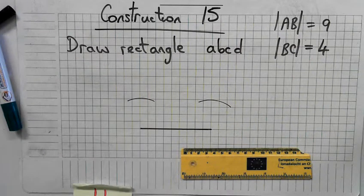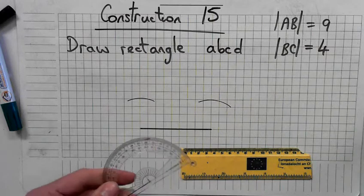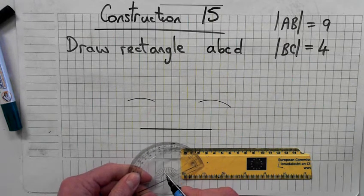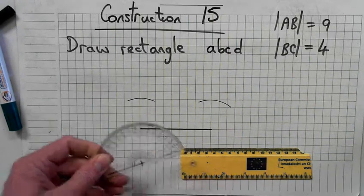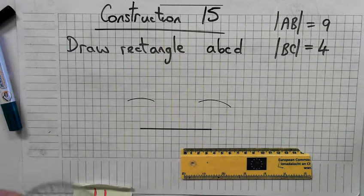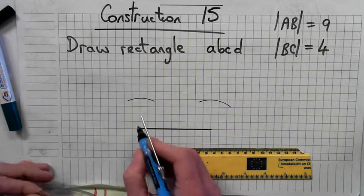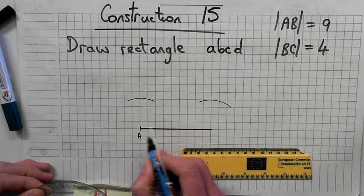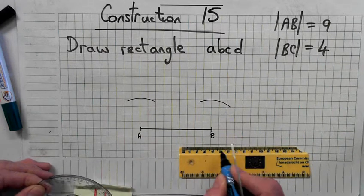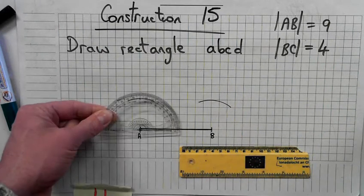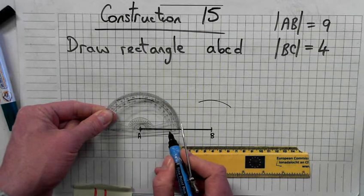We'll call this point A and that's point B. Place your protractor at point A, lining up with the line.